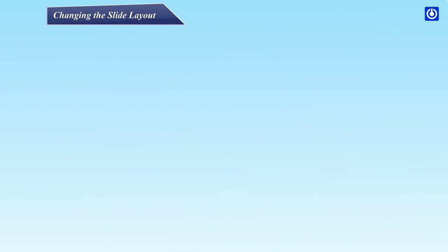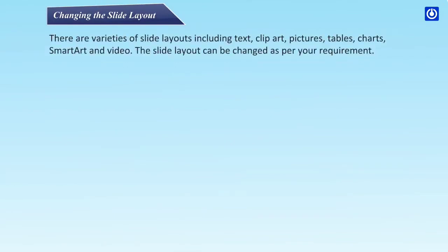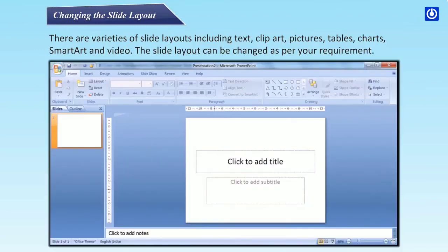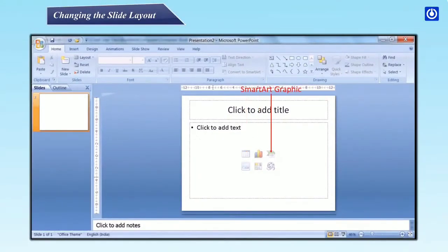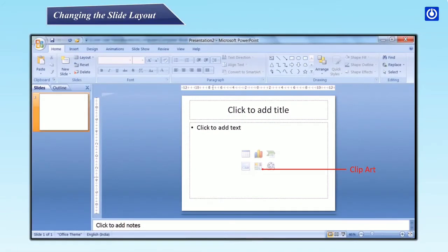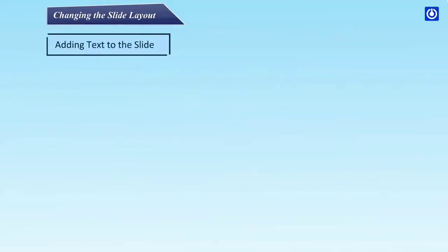Changing the slide layout: there are varieties of slide layouts including text, clip art, pictures, tables, charts, SmartArt, and video. The slide layout can be changed as per your requirement. Step one, click on the Home tab; step two, click on the Layout button; step three, choose the layout from the layout gallery — table, chart, SmartArt graphic placeholder, picture, clip art, media clip.